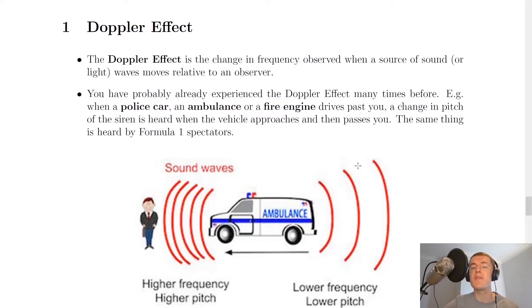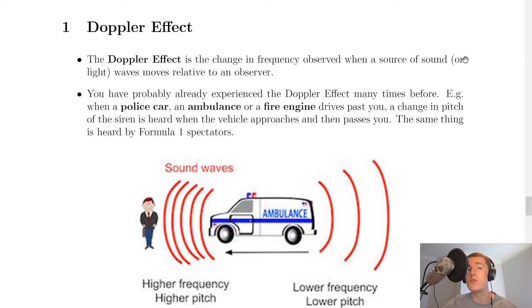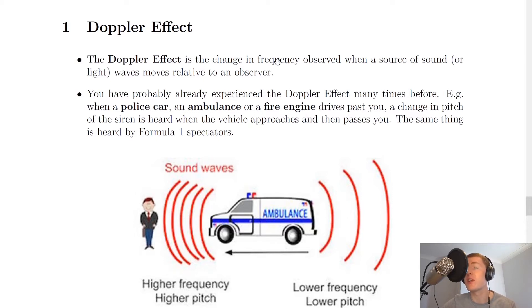We're going to start by looking at the definition of the Doppler effect. The Doppler effect is the change in frequency observed when a source of sound or light waves moves relative to an observer. Another way of saying that is the change in wavelength, because a changing frequency is going to cause a change in wavelength as well.